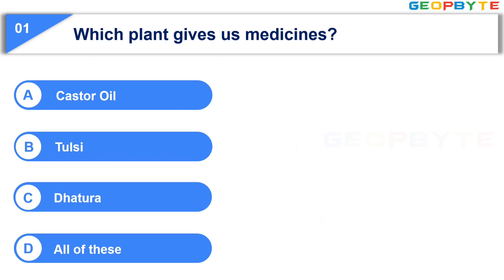Your time is up. And the correct answer is Option D, all of these. That is, Castor Oil, Tulsi, and Dhatura.